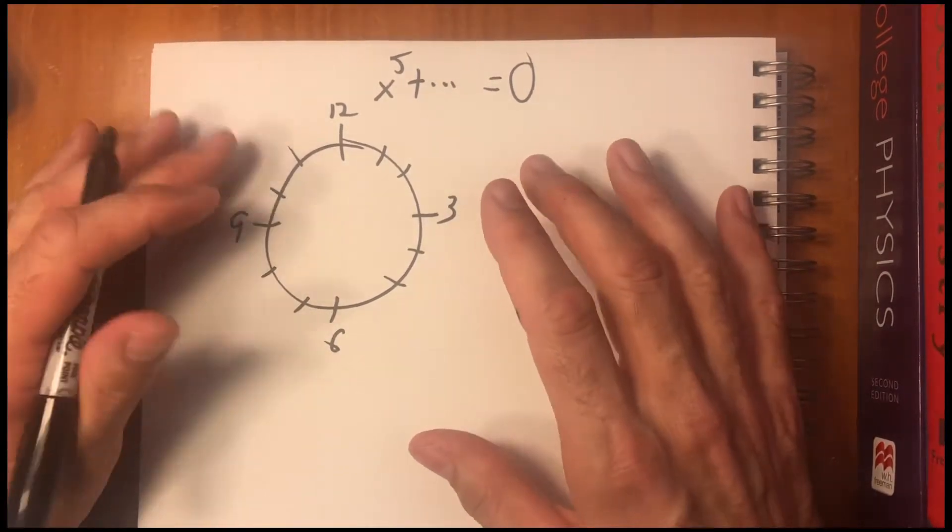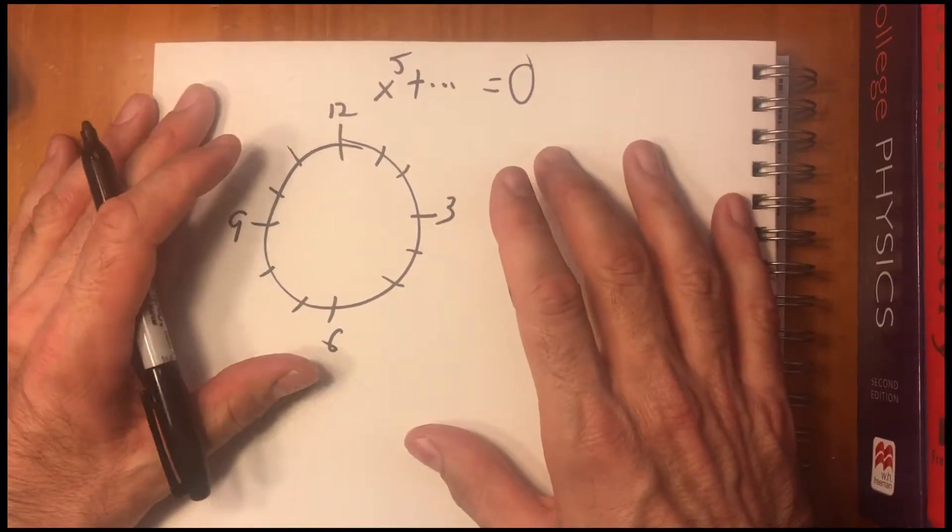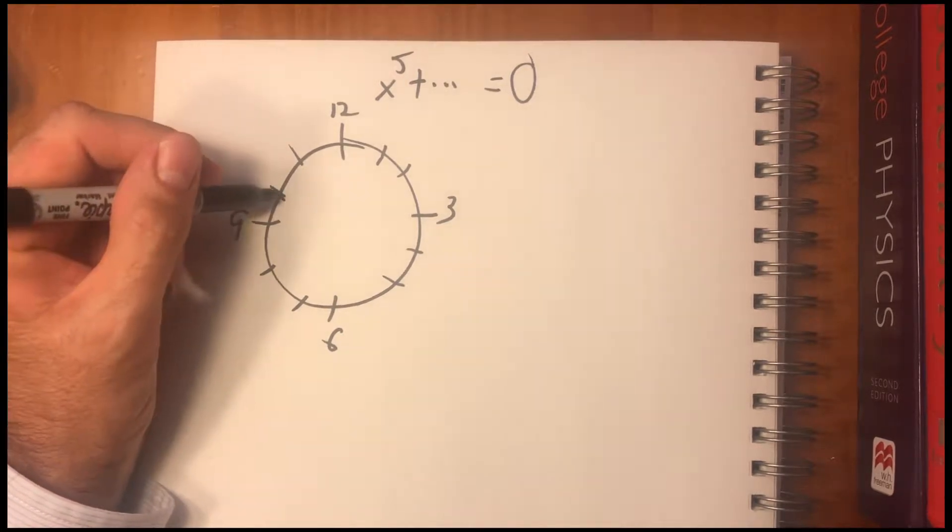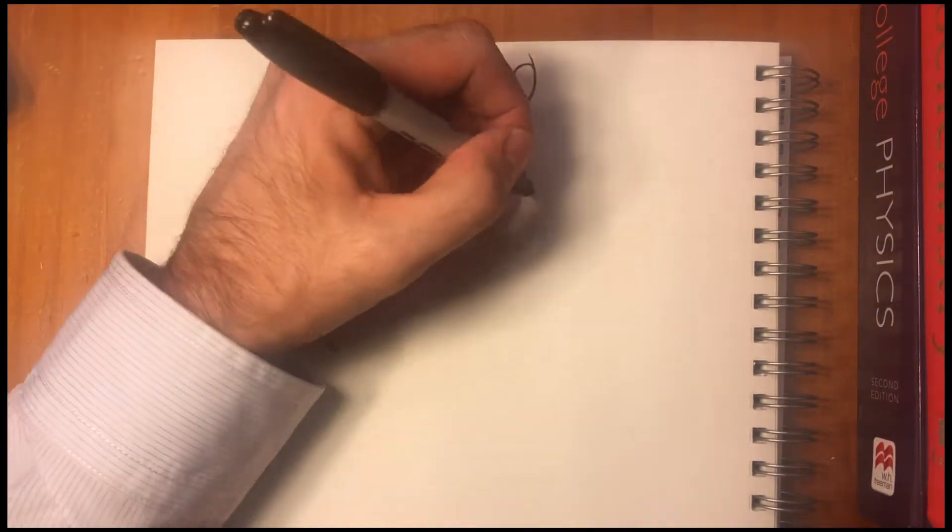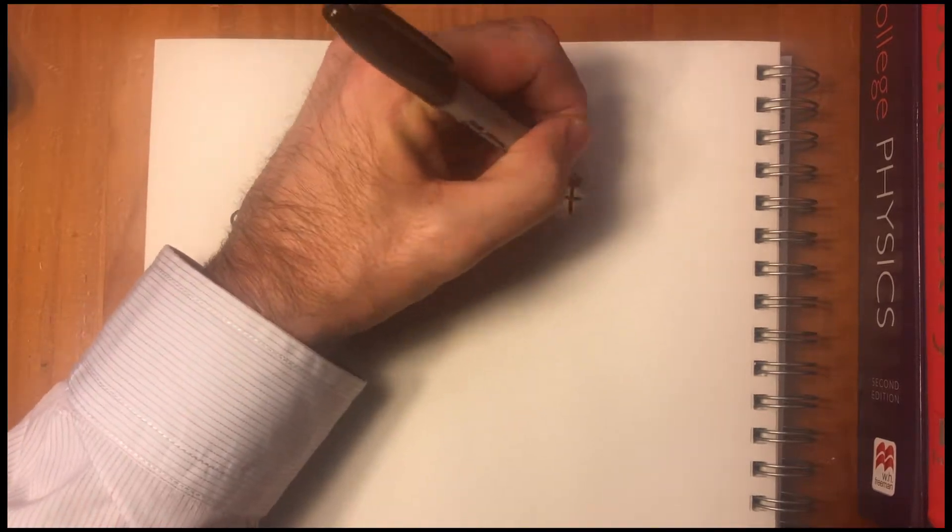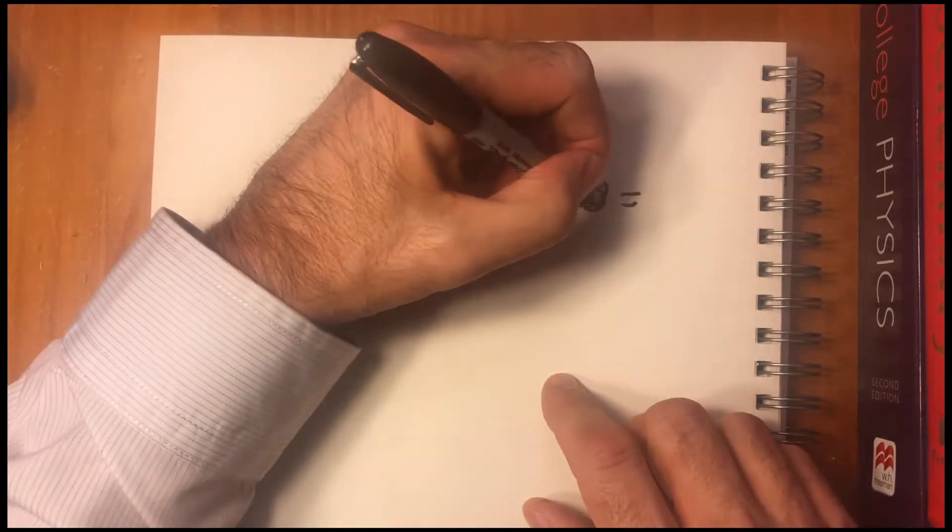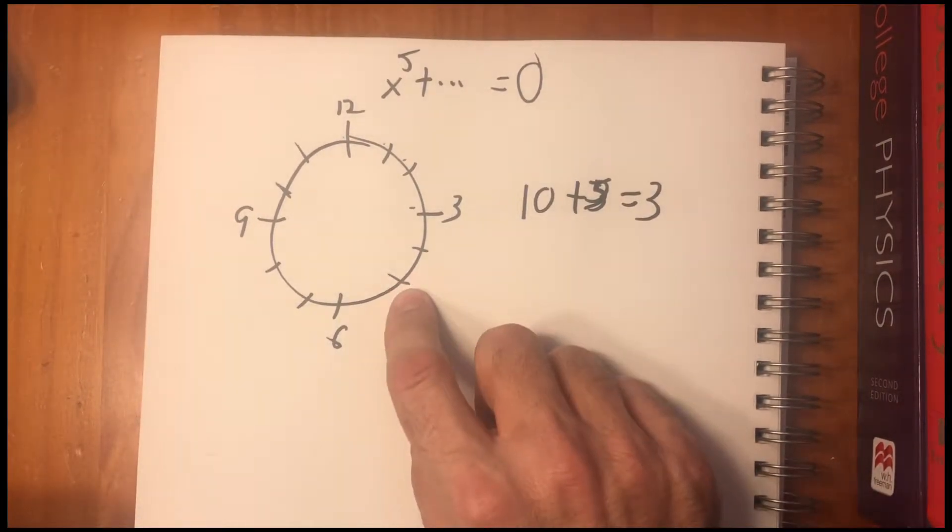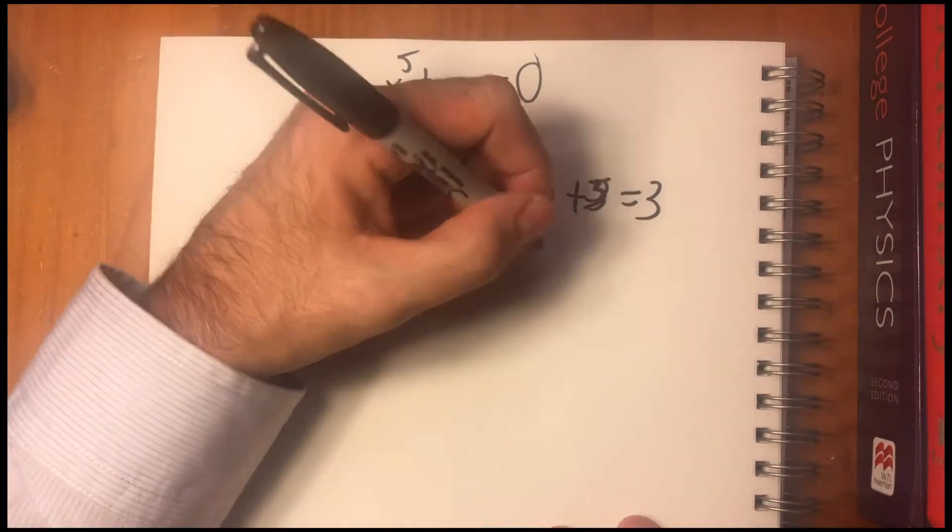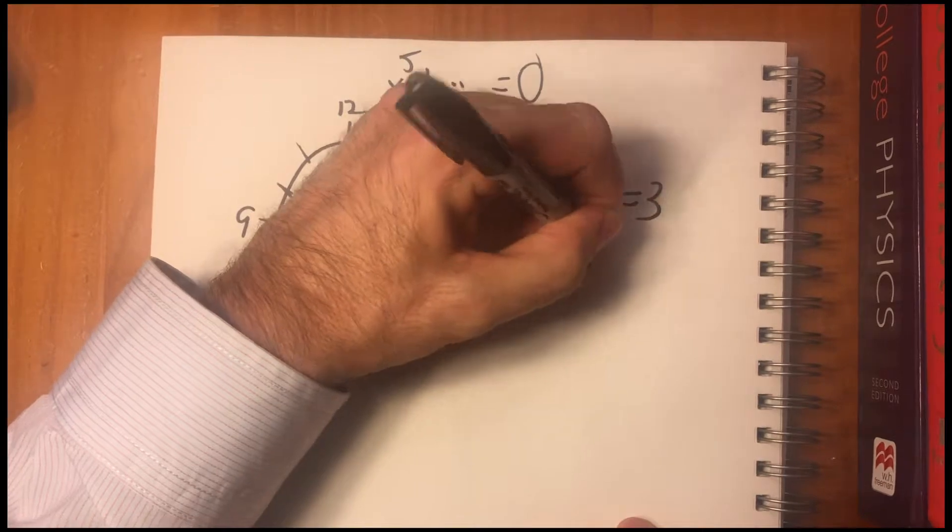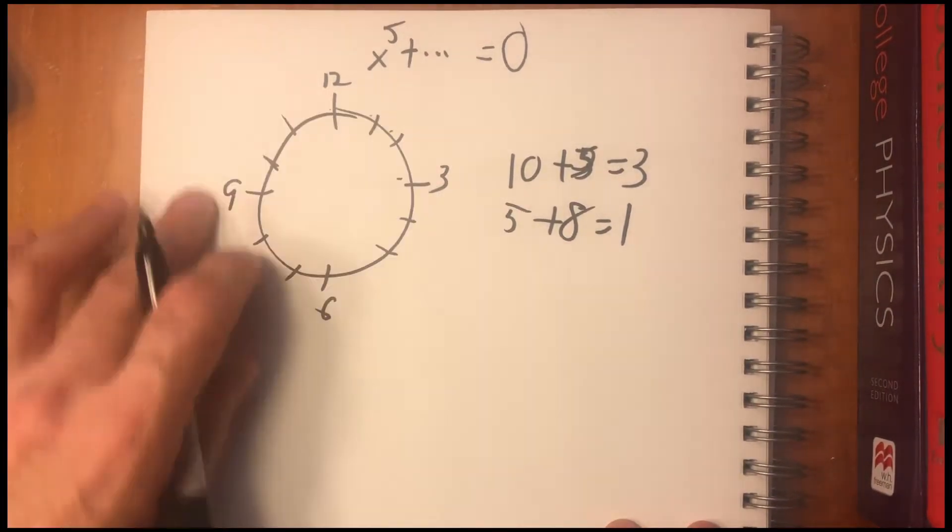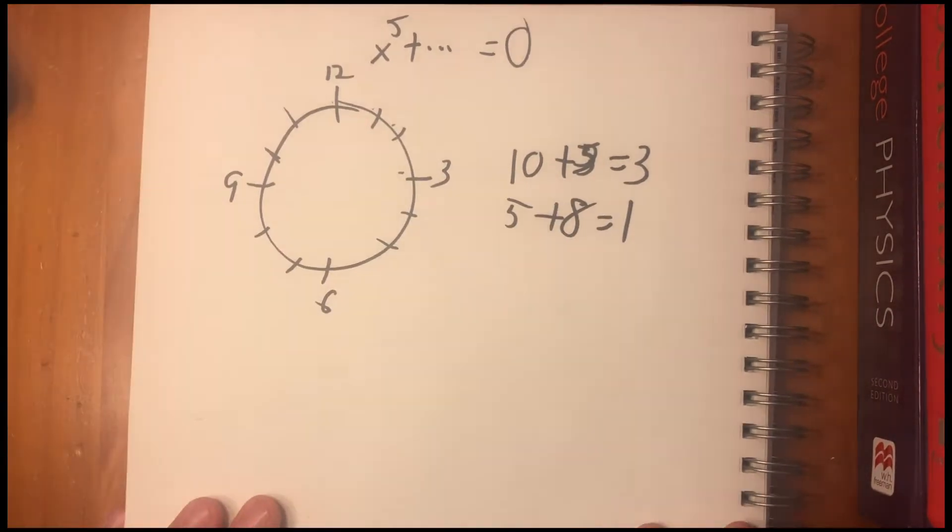This is the typical example of a finite group, because if you start at 10 and you add 5 to 10, you go 1, 2, 3, 4, 5, you end up at 3. So if you're talking in time, 10 plus 5 doesn't equal 15, it equals 3. If you start at 5 and you add 8, you get 1. So 5 plus 8 equals 1.